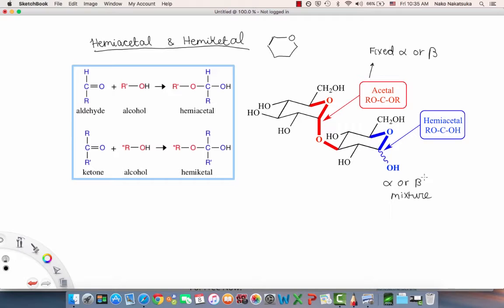So again, you probably won't go through stuff like this in too much detail in this course, but keep in mind that if you have an acetyl group, which has this form, you have a fixed alpha or beta configuration. If you have a hemiacetal, which is when you have an OH group instead of an OR group, then you're going to have an alpha or beta mixture.